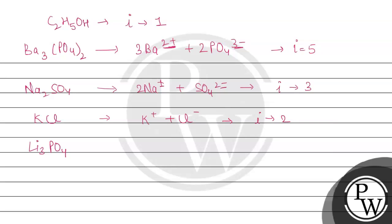Li3PO4 will give 3 Li+ plus PO4 3-. Here we can see the dissociated ions will be 4 in number, so the iota value is 4.